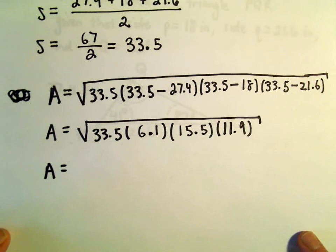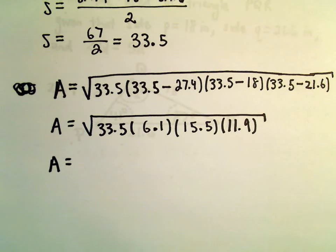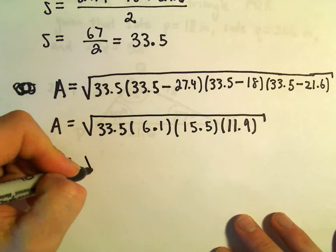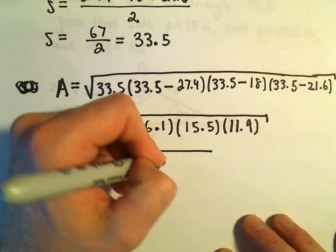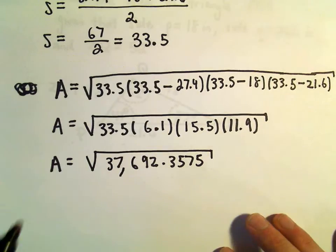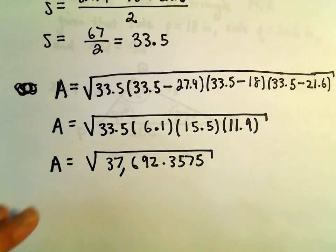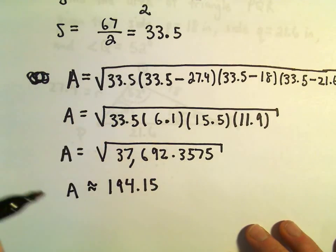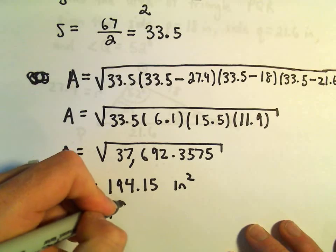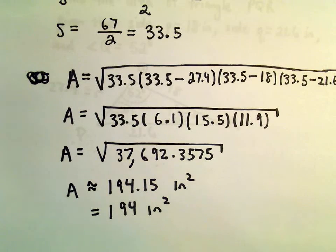So I'm going to multiply all these together now. So 33.5 times 6.1 times 15.5 times 11.9. I'm getting a pretty big number underneath there, which makes sense. 37,692.3575. So now I'm just going to square root that. And it says the area is roughly equal to 194.15 square inches. And I'm just going to round that off to 194 square inches.